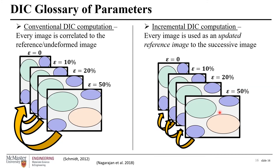In DIC there are two types of computation: conventional and incremental. In conventional computation, every image is correlated to the reference (undeformed) image. In incremental computation — more suited for higher global strains where deformation features emerge in the microstructure — every image is used as an updated reference for the successive image, so correlation is done with the previous image rather than the original undeformed state.